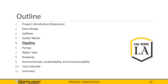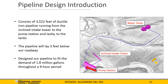Now onto the pipeline portion of this presentation. Our pipeline will consist of 3,522 feet of ductile iron pipeline, which will run from the inclined intake tower to the pump station and lastly to the tanks. The pipeline will be buried 3 feet below our roadway and is designed to fit the demand of 1.8 million gallons throughout a daily 9-hour period.